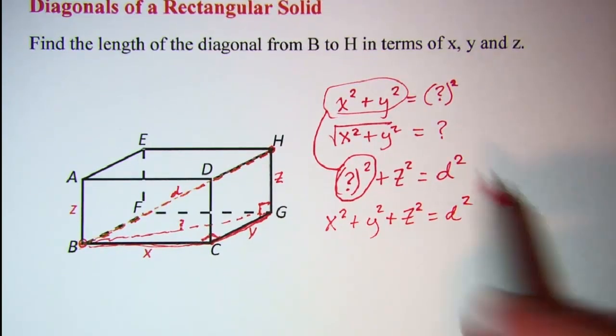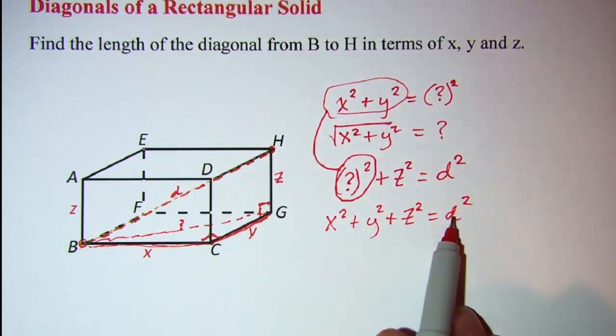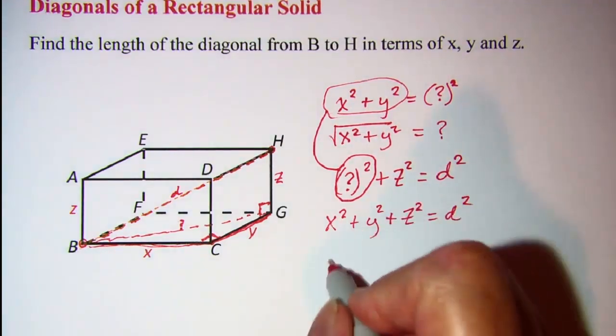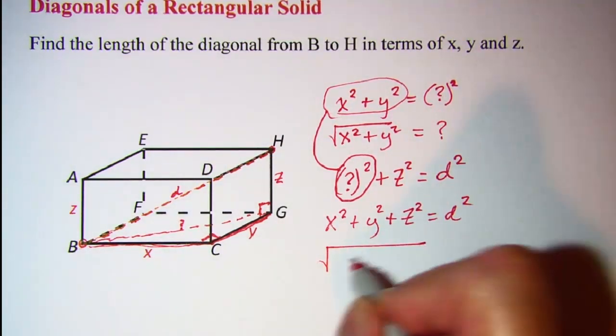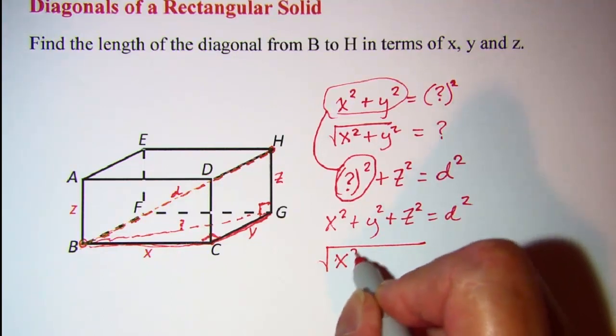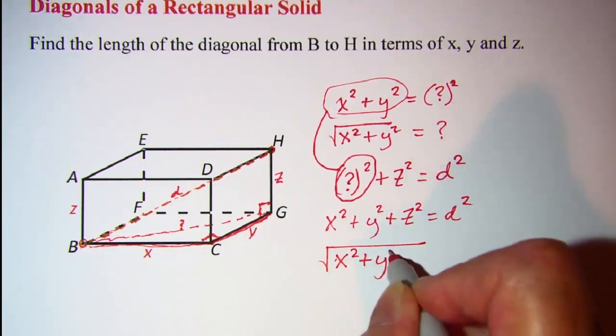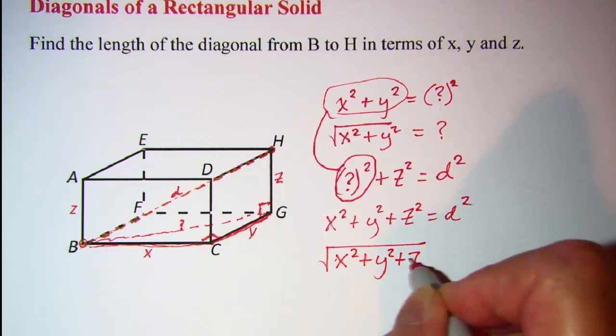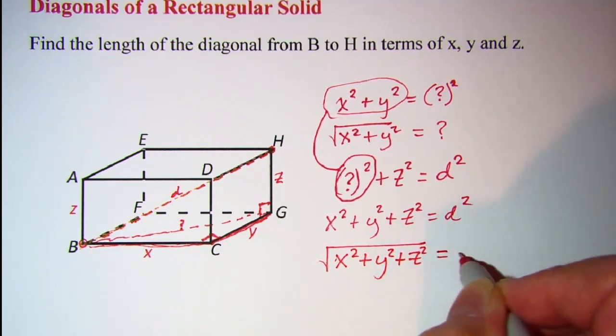So finally then to get the diagonal length I can just square root both sides and I have square root of x squared plus y squared plus z squared is equal to d.